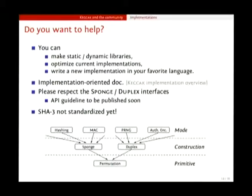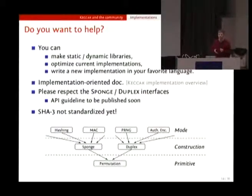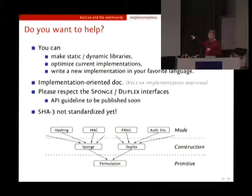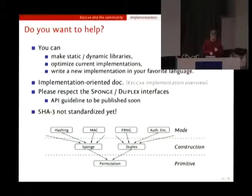So if you want, if you have time, you can help by taking these implementations and trying to make a consistent dynamic or static library. You can also optimize these implementations — probably you can do better than we did — or even write your own application in your favorite language. We have a document, the Keccak implementation overview, that gives some implementation and optimization techniques that you might want to read before diving into such work. We just wish to say two things about the interface. First, the SHA-3 standard is not out yet. Keccak has been selected as SHA-3, but we don't know exactly what NIST is going to do. We don't expect them to change Keccak in any way, but there might be little details that will make SHA-3 different from Keccak. I think the best way to be future-proof is to stick to the definition of sponge and duplex to have a consistent API.